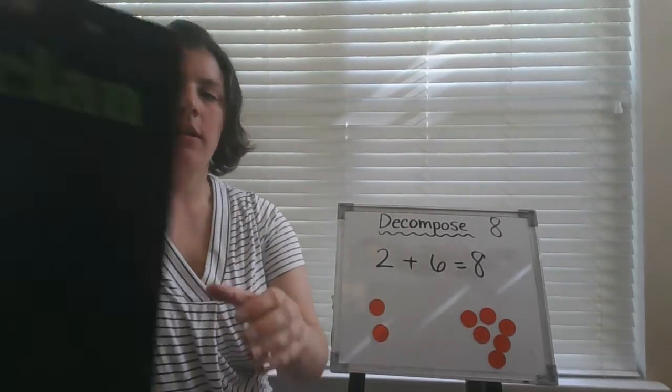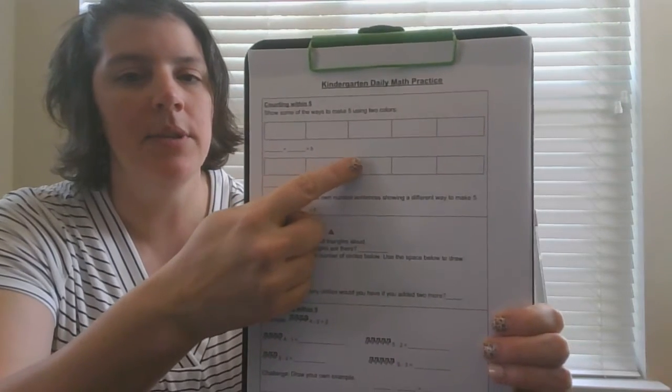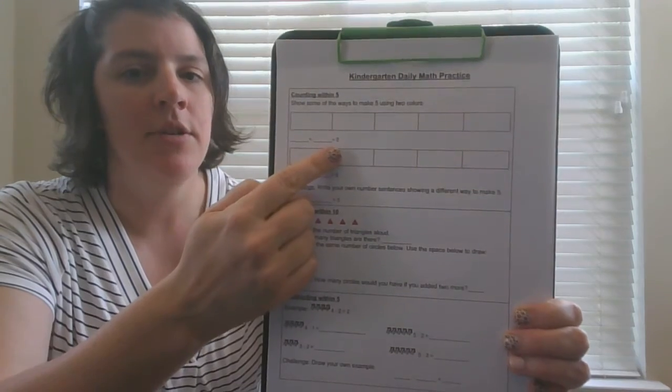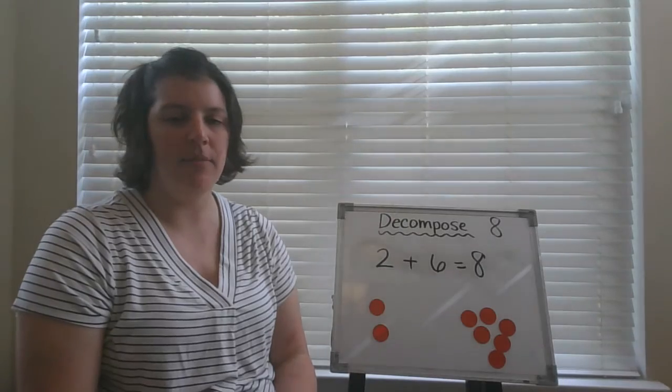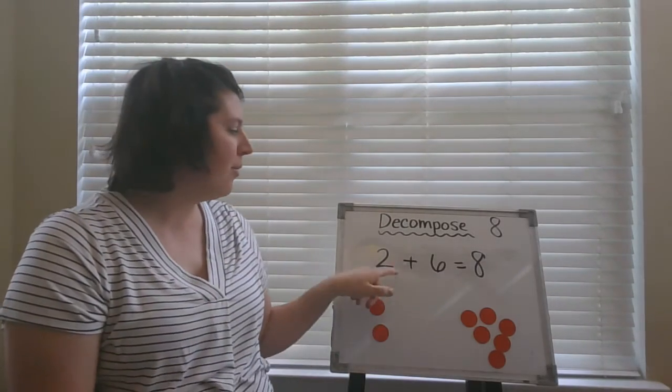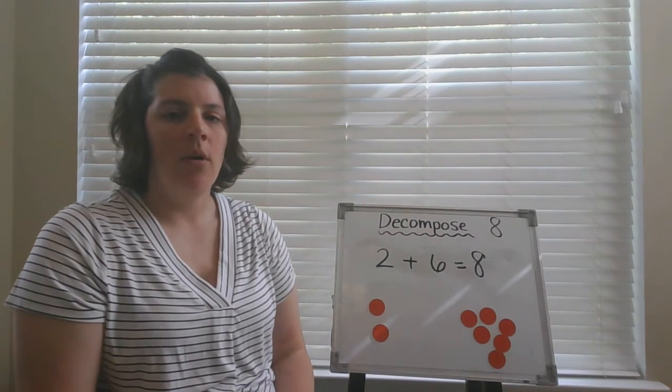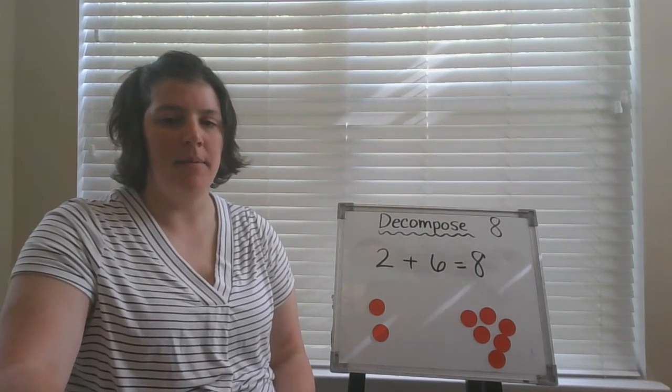When you look at the papers in your packet, you will see these symbols or number sentences to show your thinking. Now it's your turn. Look at the groups that you made with your objects and try to record your thinking using pictures, numbers, or words and symbols. Show it to someone at home and explain what it means.